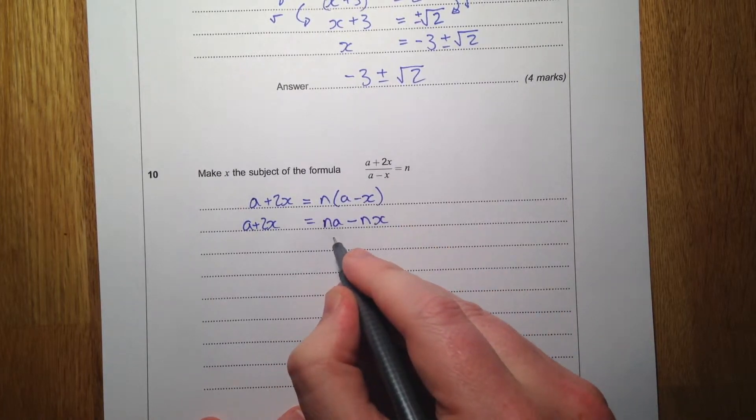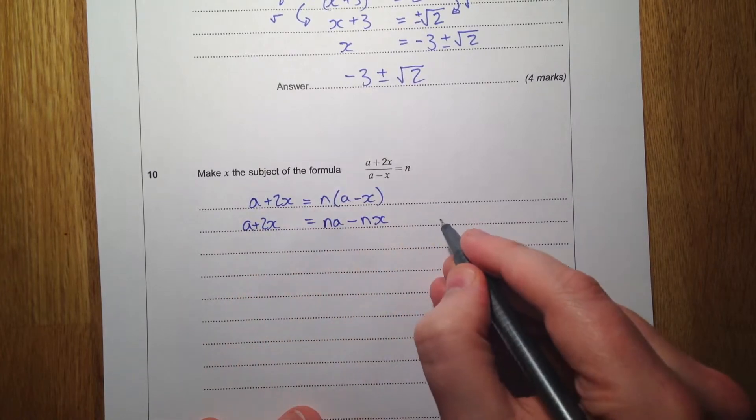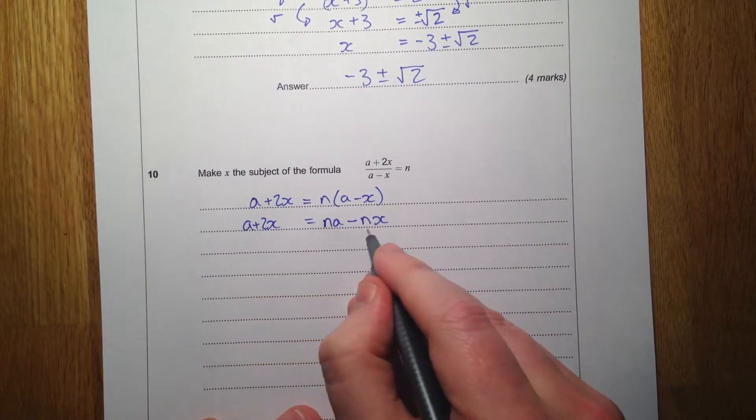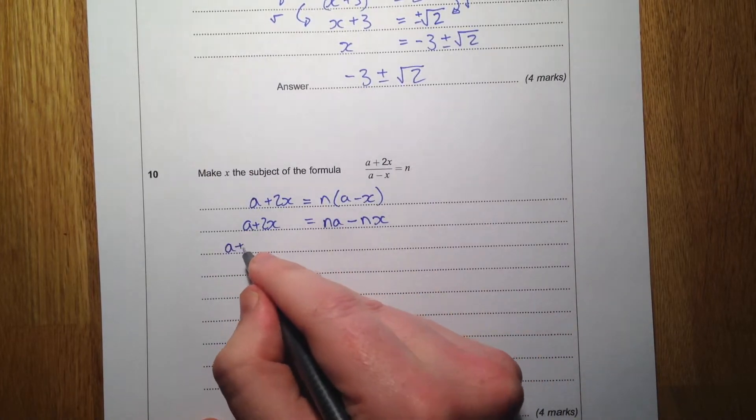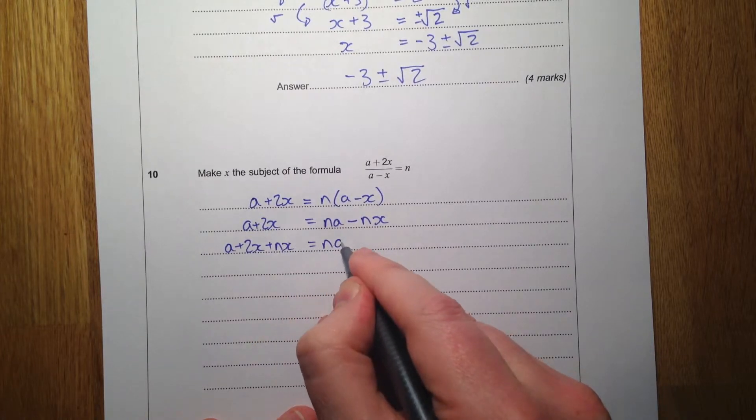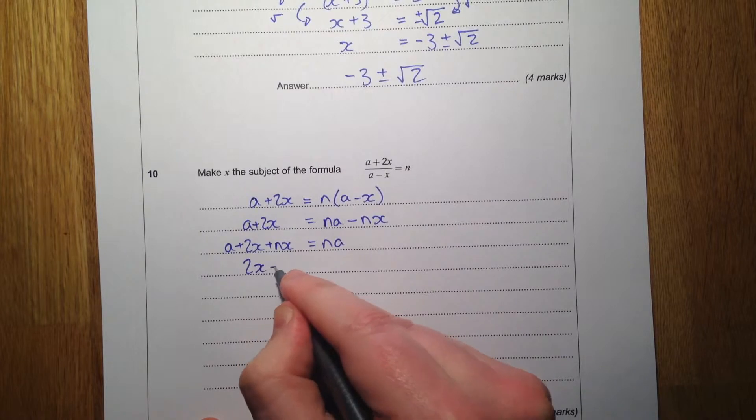Then I'm going to try and get all the x's on this side and all the other terms onto the other side. So if I add nx to the left hand side, I get that. Take away a from both sides.